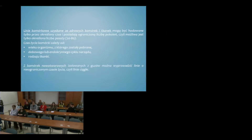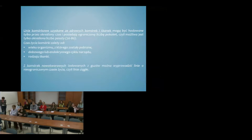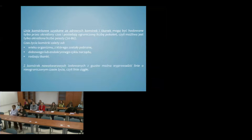Linie komórkowe uzyskane ze zdrowych komórek i tkanek mogą być hodowane tylko przez określony czas i posiadają ograniczoną liczbę pokoleń — możliwa jest określona liczba pasaży, mniej więcej od 20 do 80. Czas życia takich komórek zależy przede wszystkim od wieku organizmu, z którego zostały pobrane, dobowego lub endokrynnego cyklu narządu oraz rodzaju tkanki. Inaczej wygląda sytuacja w przypadku komórek nowotworowych — są to komórki o nieograniczonym czasie życia, czyli tzw. linie ciągłe, linie nieśmiertelne. Przykładem jest wspomniana wcześniej linia HeLa raka szyjki macicy.